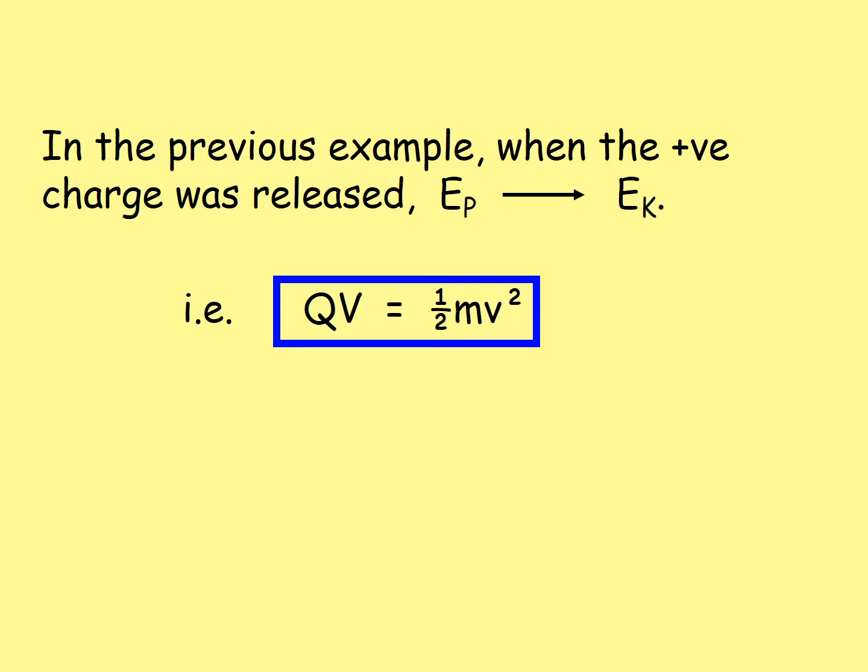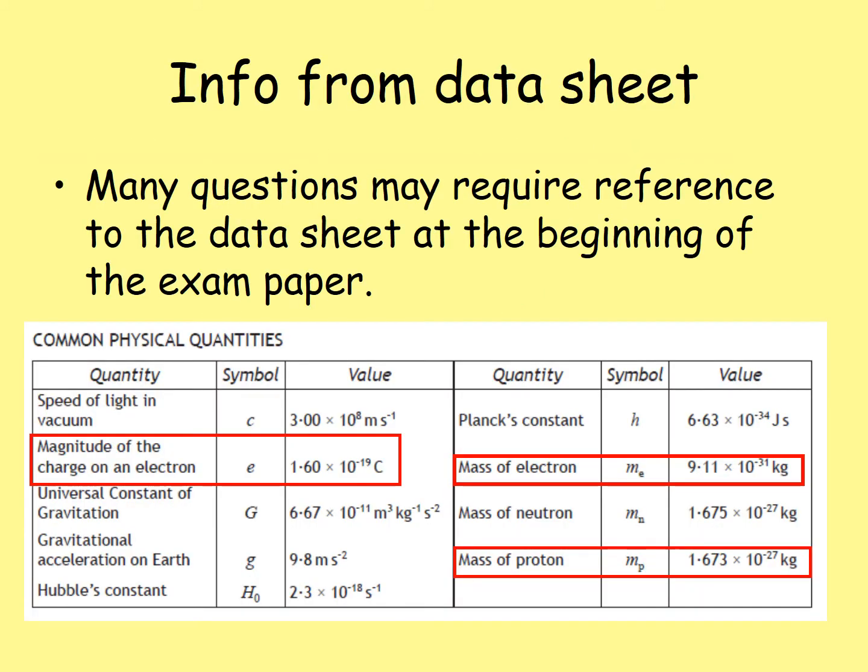In the previous example, when the positive charge was released, electrical potential energy was converted to kinetic energy — i.e. QV, the work done, was equal to ½mv². In order to do many of the examples, you need to refer to information on the datasheet, for example: the magnitude of the charge of an electron, the mass of an electron, neutron, or the mass of the proton, which are the most common ones.